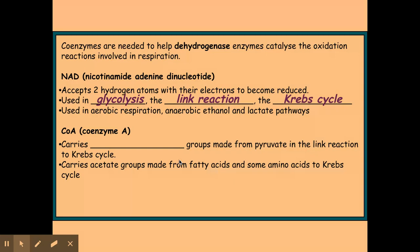The next coenzyme we're going to look at is coenzyme A. The role of coenzyme A is to carry acetate or ethanoate groups made from the pyruvate in the link reaction into the Krebs cycle. Once it's dropped off its acetate in the Krebs cycle, the coenzyme A will then go back to collect more acetate from the products of the link reaction. So that's coenzyme A and NAD.